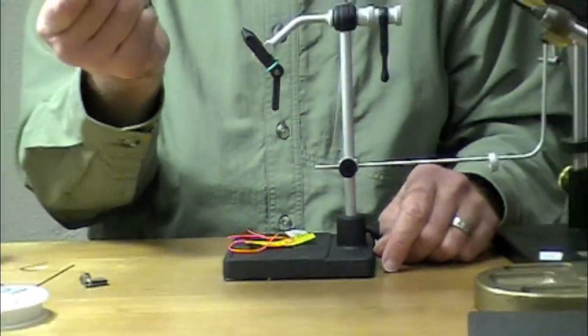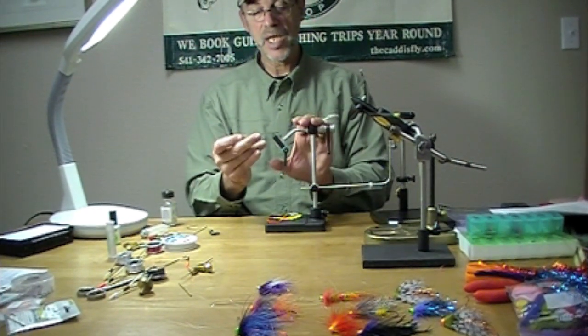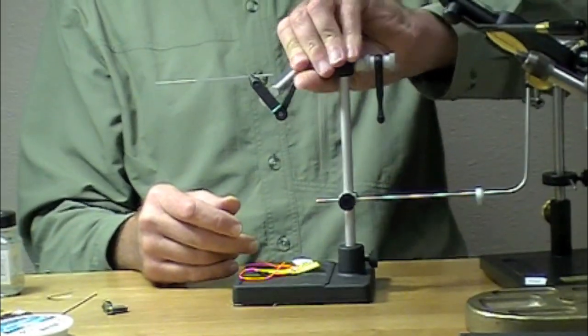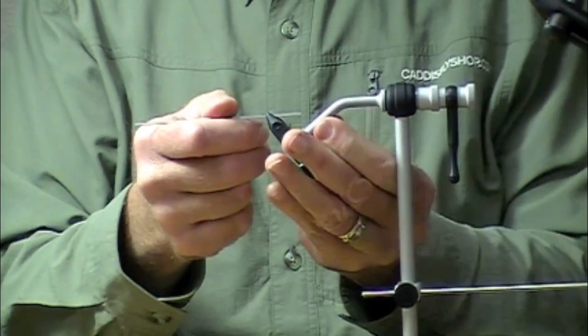How do you attach this into a vise? If you have a vise that looks like this, this happens to be a Renzetti. It's easy. You clamp it in, you're good to go. No muss, no fuss.